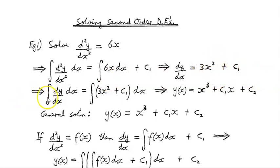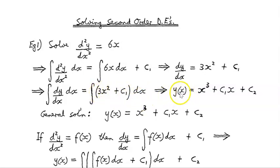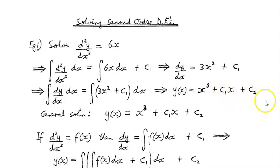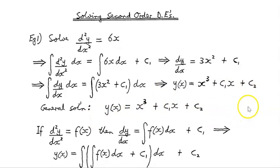We anti-differentiate again. The anti-derivative of dy/dx with respect to x is equal to the anti-derivative of 3x² + c1 with respect to x. That gives us y(x) = x³ + c1·x + c2. When we look for a particular solution, we're going to be looking for c1 and c2.